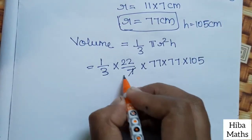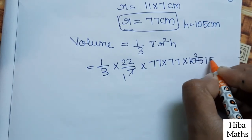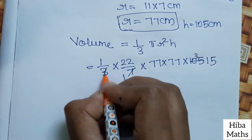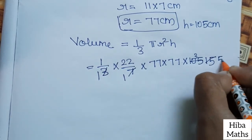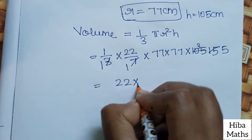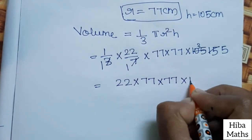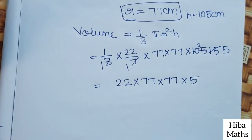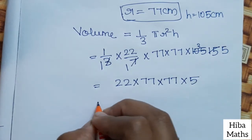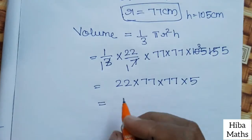We simplify: (1/3) × (22/7) × 77 × 77 × 105. In the 7 table: 7 divides 77 giving 11, and 3 divides 105 giving 35. Then we calculate 22 × 77 × 77 × 5 to get the final value.